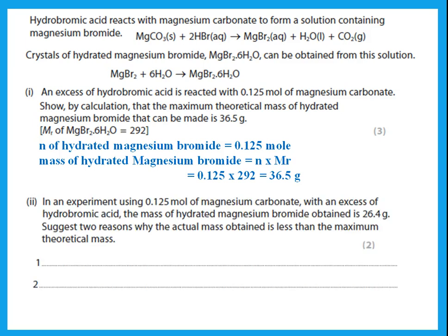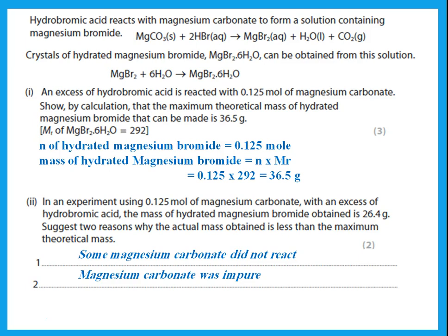In the actual experiment, only 26.4 g was obtained instead of the theoretical 36.5 g. The actual mass is less than the theoretical maximum. Possible reasons: some magnesium carbonate did not react; the original magnesium carbonate was not pure; or some solid was lost on the filter paper.